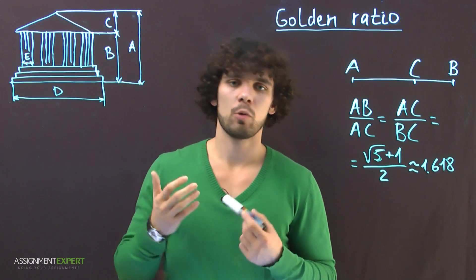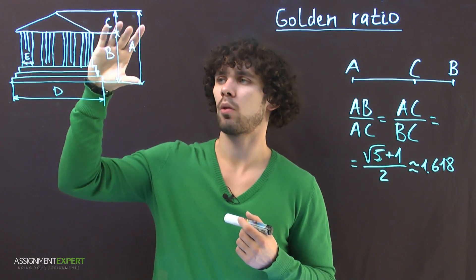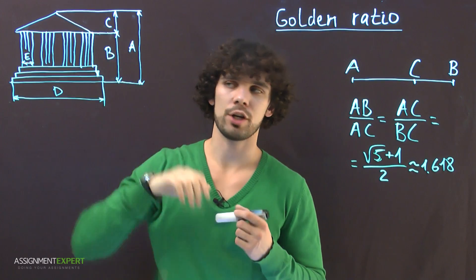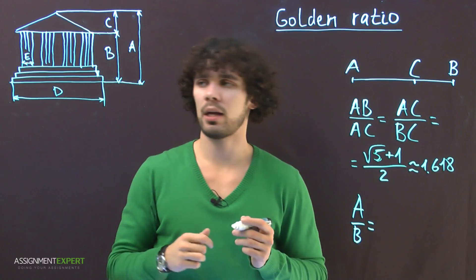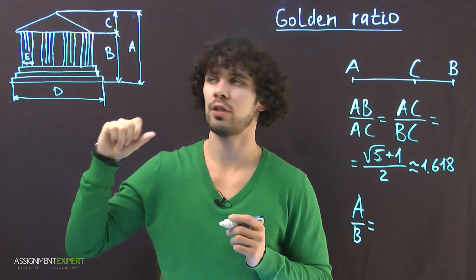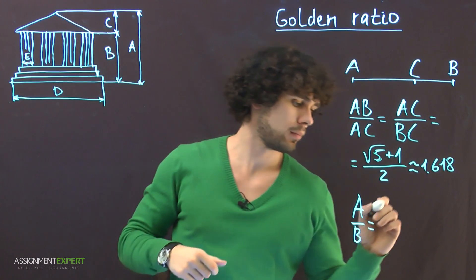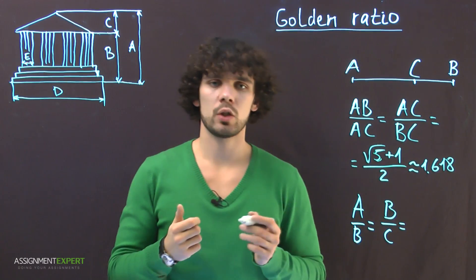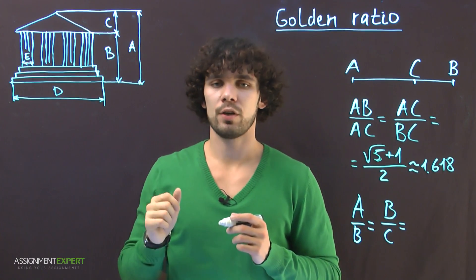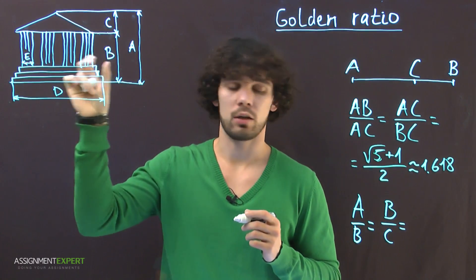If we look at the temple, we will see that the height of the temple refers to the height of its lower part in the same way as the height of the lower part refers to the height of the upper part, and also in the same way as the width of the temple refers to the sum of width of all the columns.